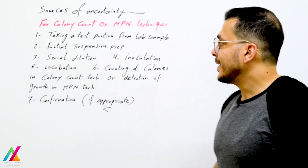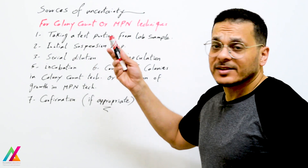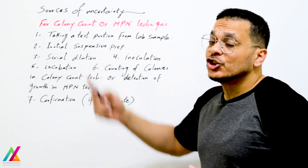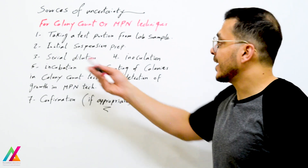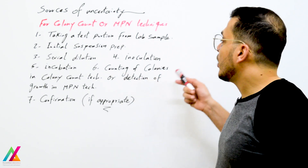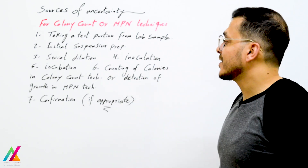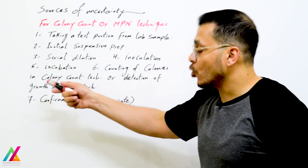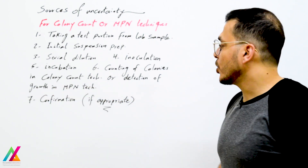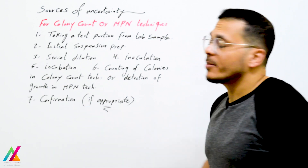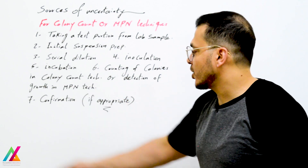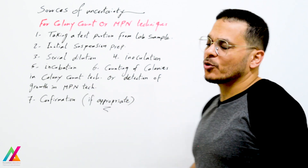For colony count or most probable number techniques, sources of uncertainty include: taking a test portion from the lab sample, initial suspension preparation, serial dilution, inoculation, incubation, and counting of colonies. In colony count technique, counting of colonies is a source of uncertainty, as is detection of growth in the most probable number technique.